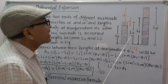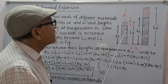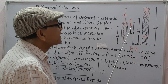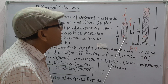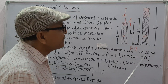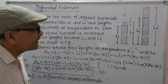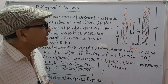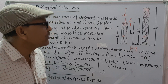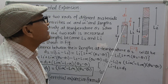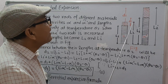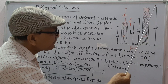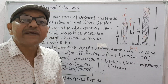Let L1 and L1 dash be the initial lengths of the two rods at temperature theta 1, and alpha and alpha dash be their linear expansivities respectively. When the two rods are heated to temperature theta 2, their lengths become L2 and L2 dash respectively after expansion.